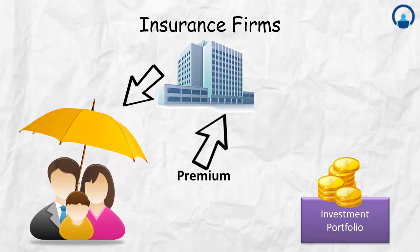The main expense for an insurance firm is paying out claims. For example, if a person has taken out automobile insurance and gets into an accident, the insurance firm has to compensate that person. That payout is essentially the core expense for an insurance firm.